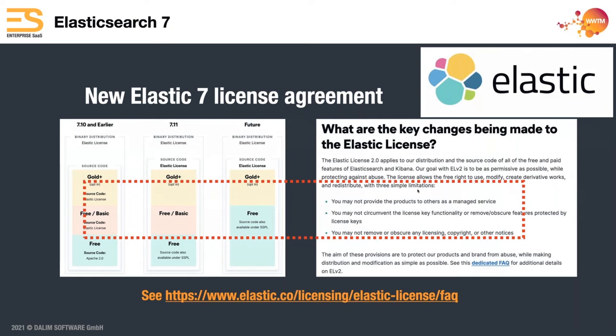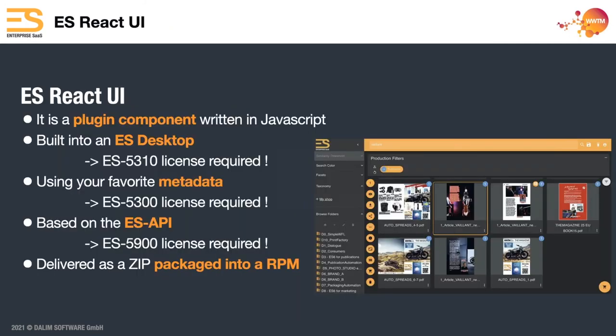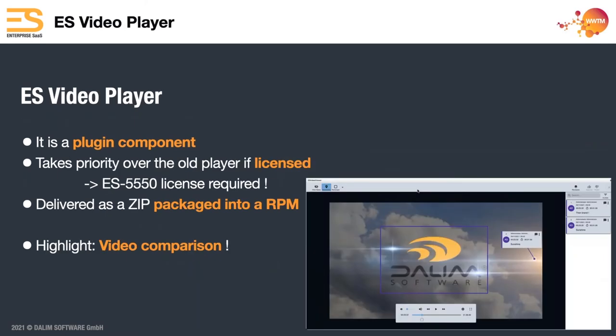For the ES React UI: it comes with ES with the new service pack, is a plugin component written in JavaScript, and you need modules 5310, 5300, and 5900 — the ES desktop module, metadata, customized metadata, and the ES API. It's delivered as a zip package with RPMs to install. For the video player, you need module 5550 from the license — the new media option — along with soft proofing.